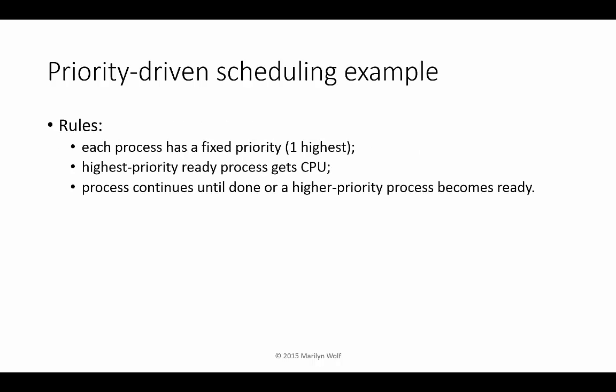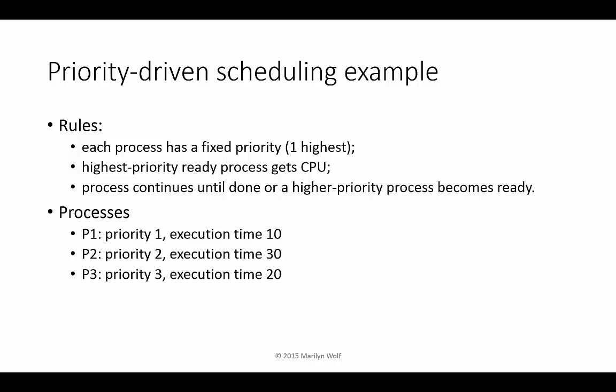Here's a simple example to illustrate priority-driven scheduling. We typically use one to denote the highest priority process. In this example, we use fixed priorities. The highest priority ready process gets the CPU, and that process continues to execute until either it's done or a higher priority process becomes ready. We'll use three processes: P1 has the highest priority and an execution time of 10; P2 has medium priority and an execution time of 30; P3 has the lowest priority and an execution time of 20.